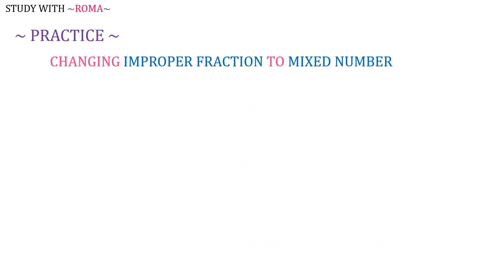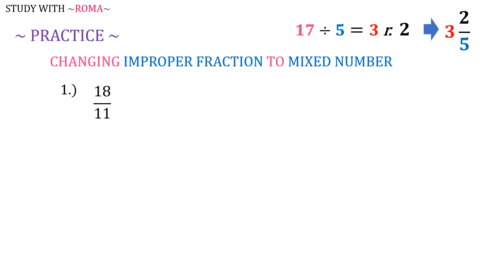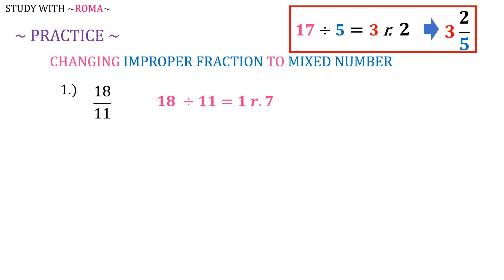Now let's practice changing improper fraction to mixed number. Number 1: 18 over 11. Remember our guide? So 18 divided by 11 is equal to 1 remainder 7. 1 will be the whole number and 7 will be the numerator. So 18 over 11 is equal to 1 and 7 over 11.